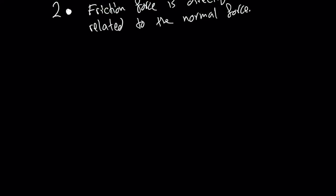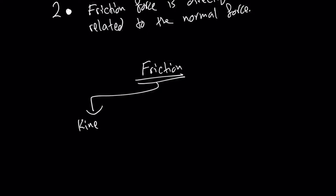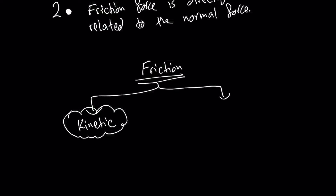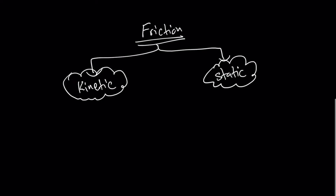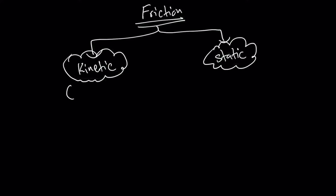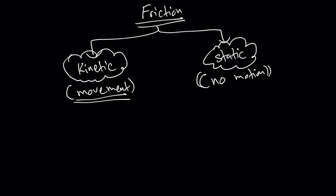Now we're going to write down the two types of frictional forces. Friction can be broken down into two main types. Number one: I have kinetic friction. The second type is static friction. Kinetic — from the word kinetic — means movement is involved. Static means no motion, from the word static, meaning standing still.